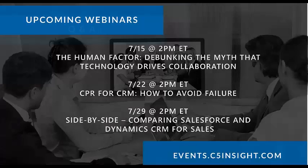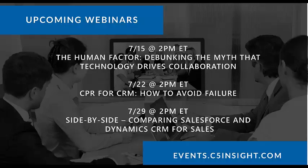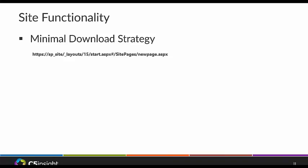One more slide — just wanted to let you know about our other upcoming webinars. You can bookmark events.c5insight.com — no 'www' needed. We offer a lot of content both strategic and tactical around collaboration and relationship management, covering SharePoint, Dynamics CRM, and Salesforce. To reach us, visit c5insight.com where there's a contact form and links to our social media pages. Thank you for joining us — we hope to see you at future webinars.